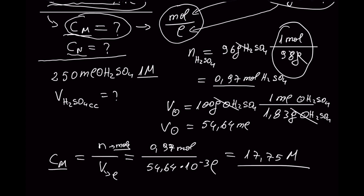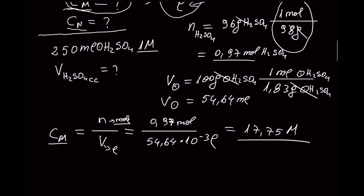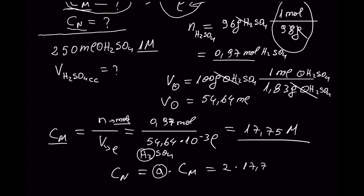If we have the molar concentration, can we find the normal concentration? I'm going to make a separate video covering all scenarios, but here is a simple formula: normal concentration equals 'a' multiplied by the molar concentration. In this case, 'a' represents the number of hydrogens in sulfuric acid, which is 2 (H₂SO₄). So it's 2 × 17.75 M = 35.5 N.